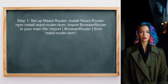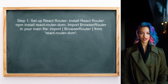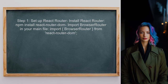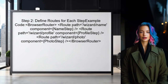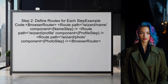To implement permanent URLs for each step in the Redux Form Wizard, you should first set up React Router in your application. This will allow you to manage navigation and URL changes effectively. Next, define routes for each step of the wizard by creating a route for each component that corresponds to the steps in the wizard.